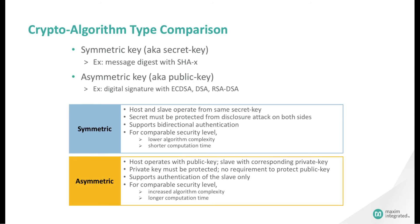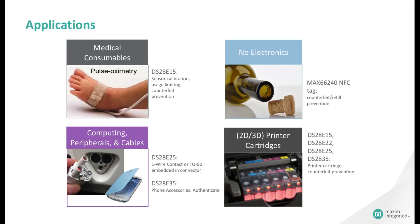In summary, there are two types of crypto algorithm: the symmetric key and the asymmetric key. In an ECDSA system, the host operates with the public key and the slave device operates with a corresponding private key. The private key must be protected, while the public key does not need protection. In symmetric key types such as SHA-256, the host and slave operate from the same secret key, and the secret must be protected on both sides. The symmetric key has lower algorithm complexity, thus shorter computation time, compared to the asymmetric one.